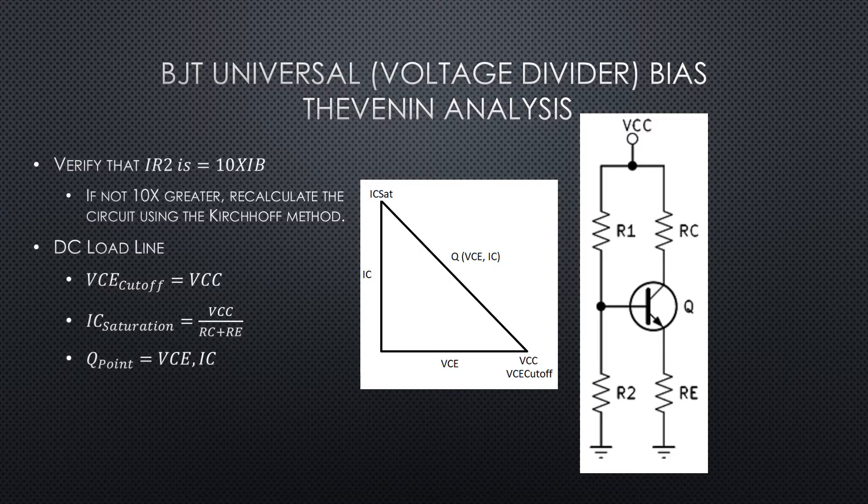So here's where it's not going to work for us, and after we've calculated our IB, we need to check to see that IR2 is at least 10 times bigger than our IB.